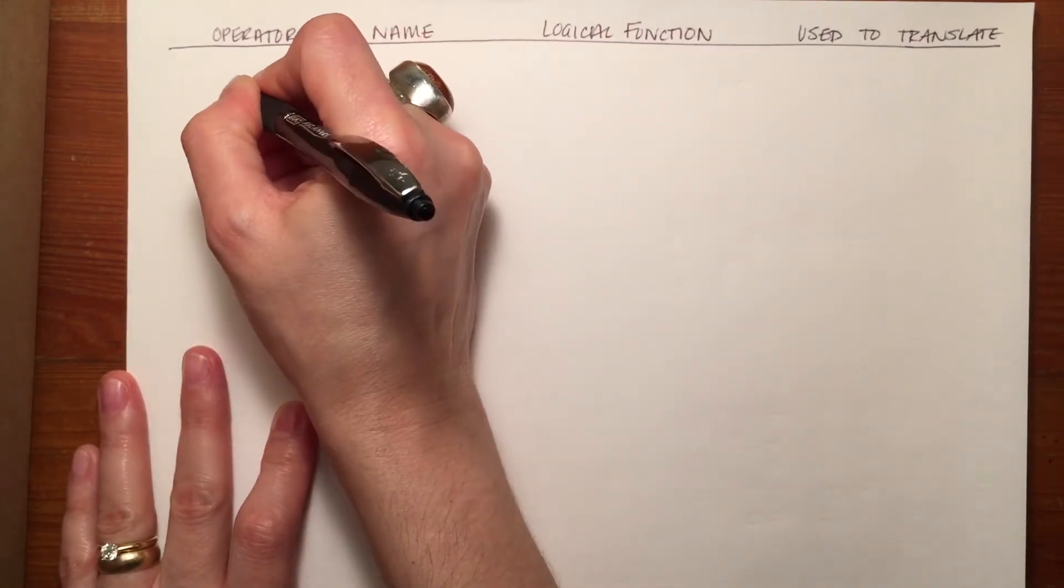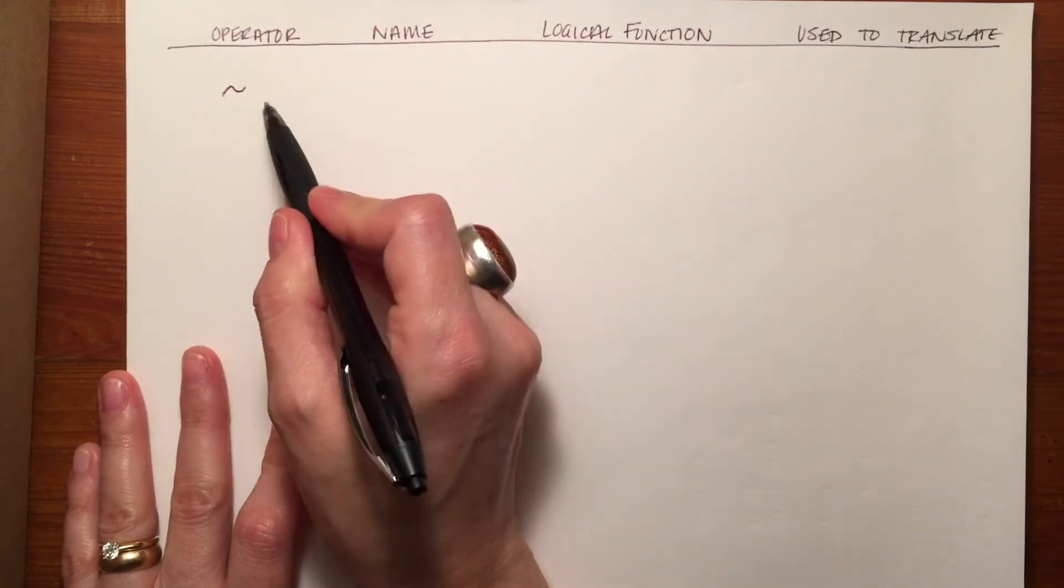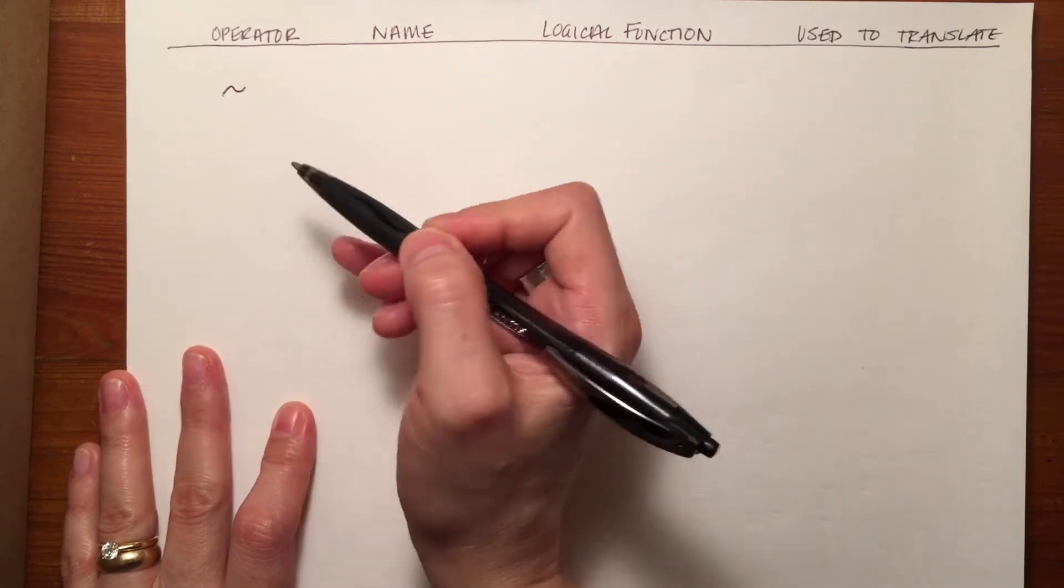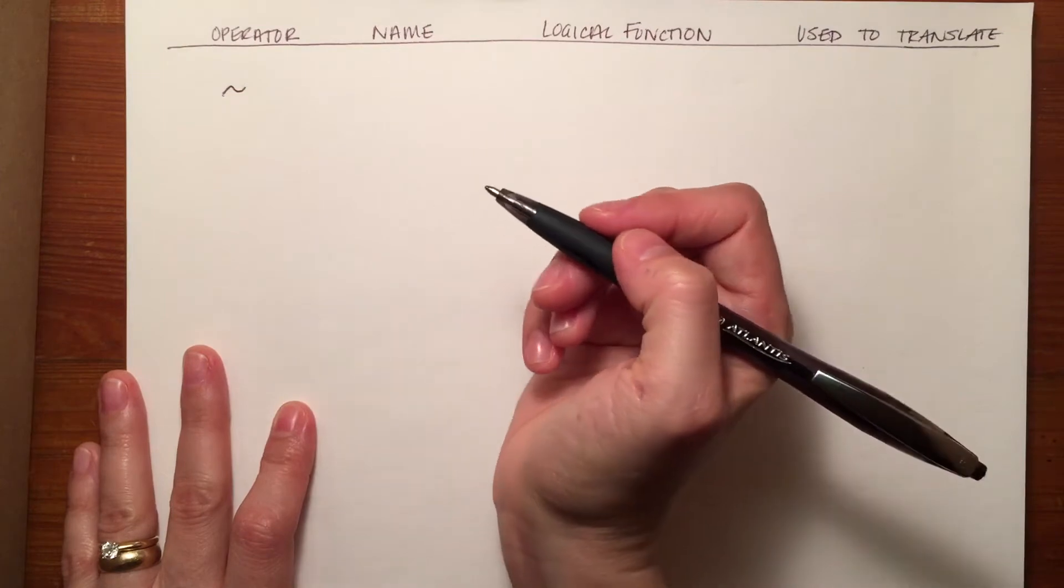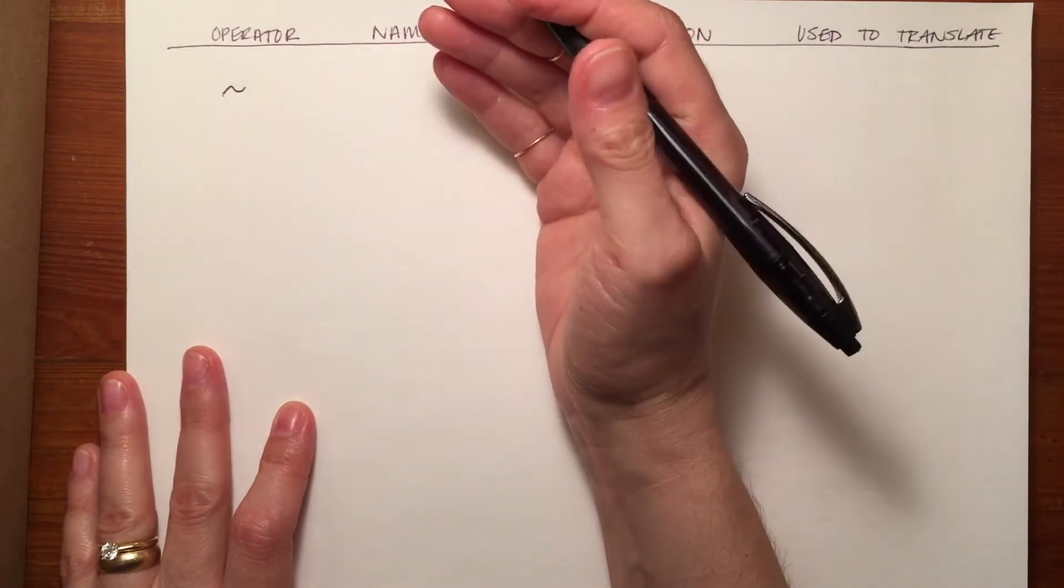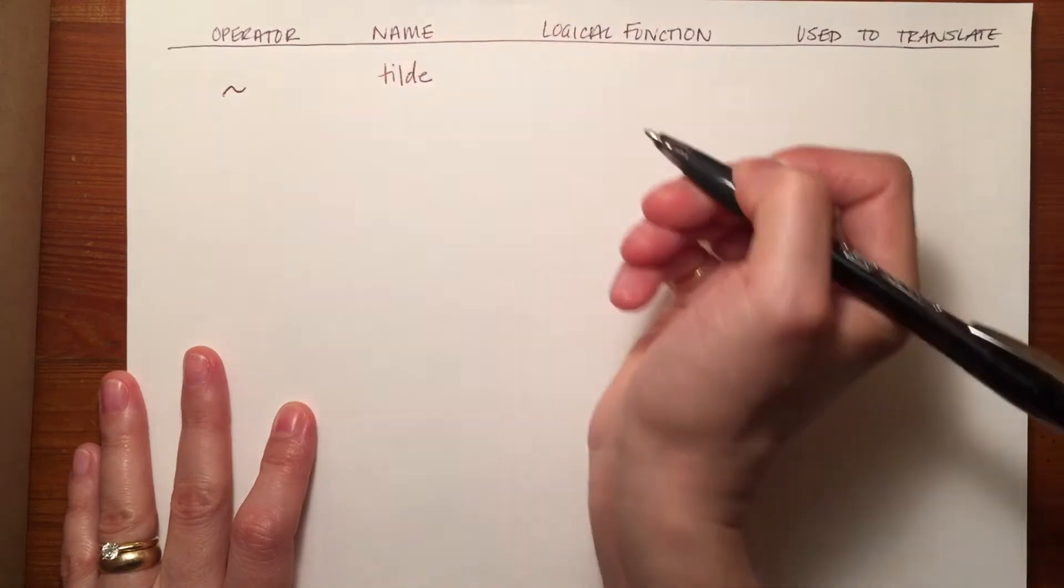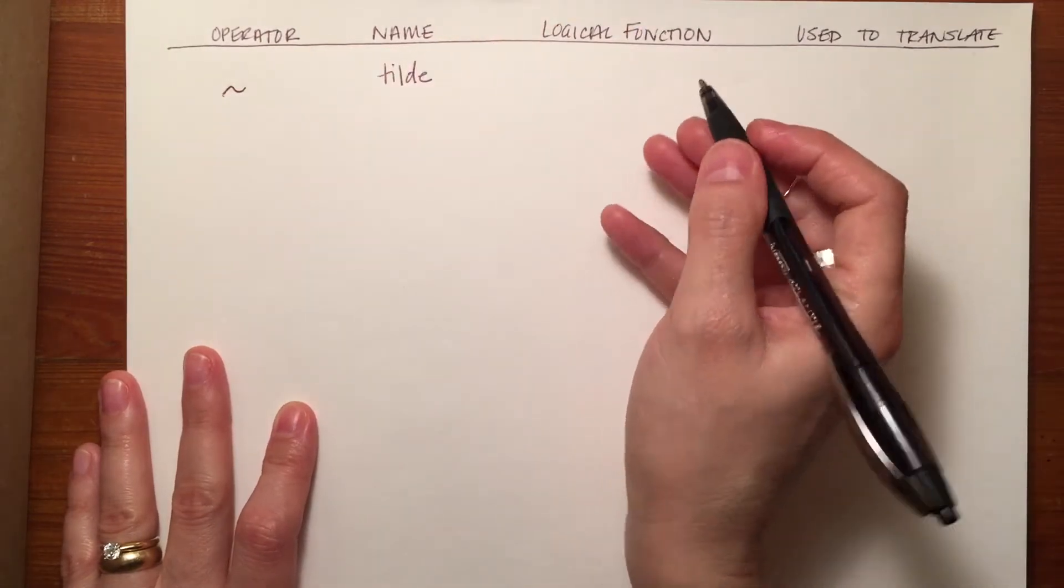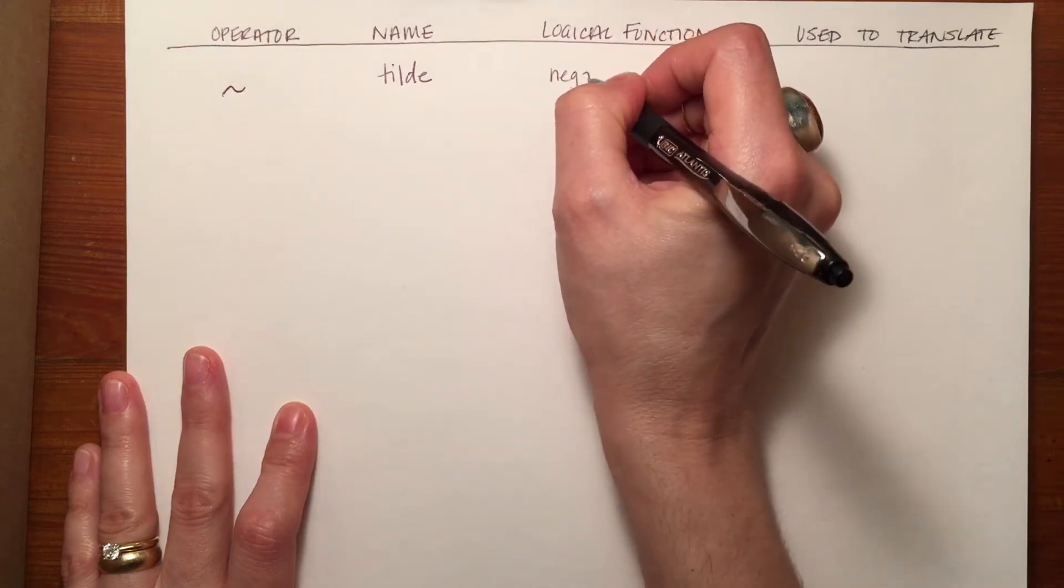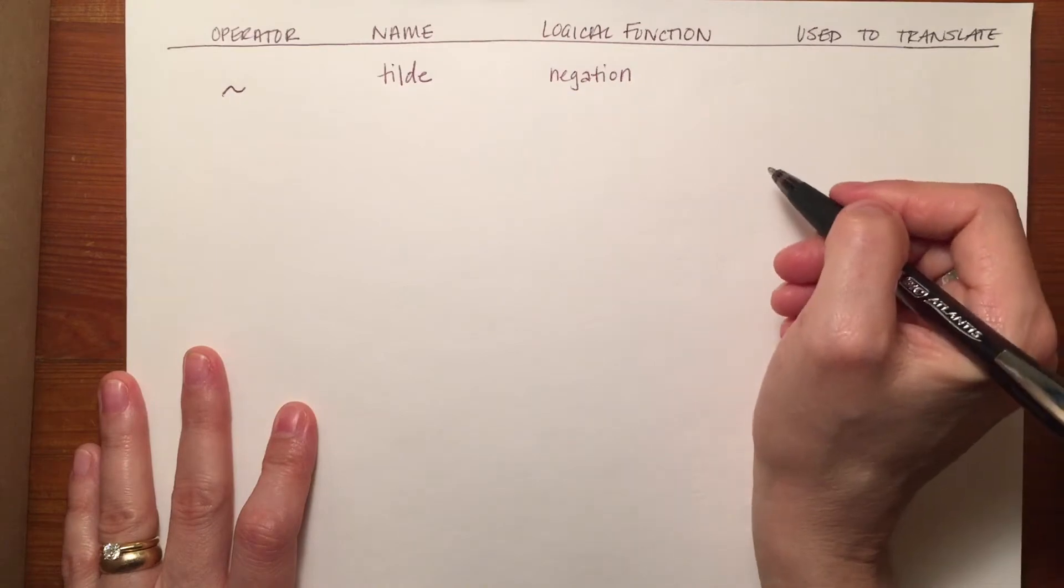The first one may look familiar to you. It usually goes above and to the left of a particular letter, almost like a negative sign in mathematics. You may also be familiar with it from your computer keyboard. It's called a tilde and its logical function is negation.